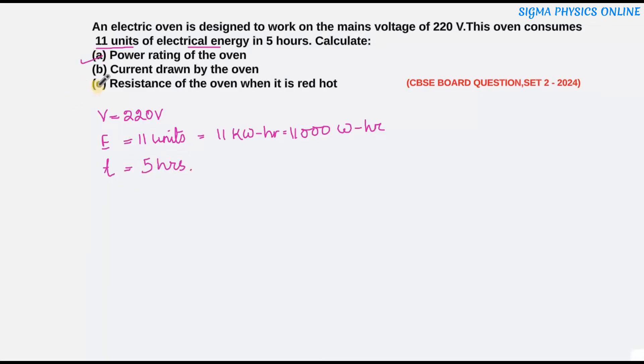Now we will have to find out the power rating of the oven. We know the power is given by the rate of consumption or dissipation of electric energy. It's energy by time. Now if you substitute the value of energy over here we get it's 11,000 watt hour by the time is given that the oven is used for 5 hours, so it is 5 hour.